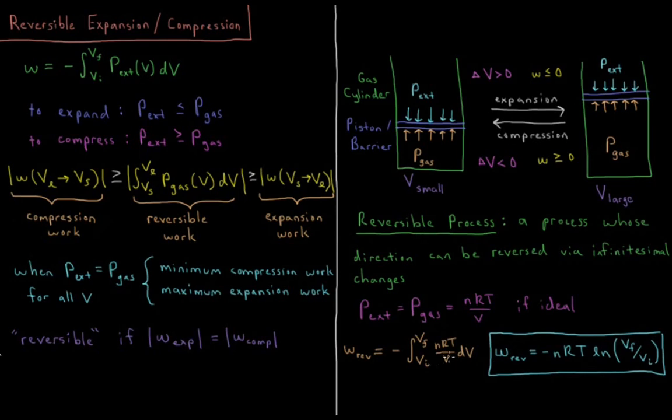So we get, evaluating those at both ranges, we get the natural log of V final minus the natural log of V initial. And the natural log of A minus the natural log of B is the natural log of A over B. So this results in the reversible work for an ideal gas is equal to negative NRT times the natural log of the final volume divided by the initial volume.